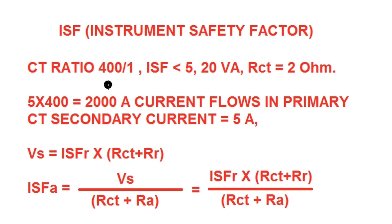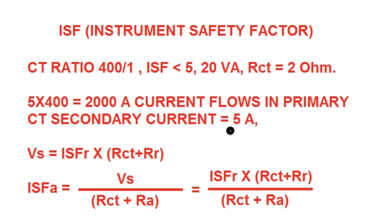Here the CT ratio is 400/1. So 5 times the rated current — that is 5 × 400 = 2000 amperes — flows in the primary side, and the CT secondary current will be 5 amperes. Under fault condition, if more than 2000 amperes flows in the primary, the CT will saturate, so there will be no increase in the CT secondary current. Hence the instrument on the CT secondary side will not detect or sense this higher current, and will be protected by CT saturation. That is why Instrument Safety Factor is provided for metering class CTs.